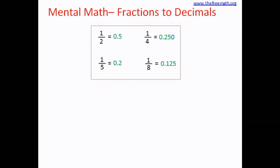Once you know these fractions, they will help you convert other fractions to decimals. Suppose you have to convert 4 over 5. One way is to make the denominator 10. Another way is: you know that 1 over 5 is 0.2, so 4 over 5 is 4 times 0.2, which is 0.8. The next one is 3 over 8. You know that 1 over 8 is 0.125, and 3 times that is 3 over 8. So 3 times 125 is 375, meaning this fraction equals 0.375.